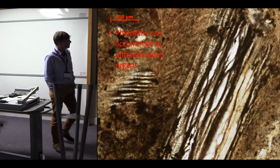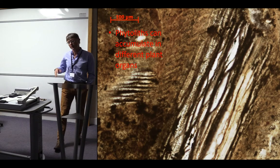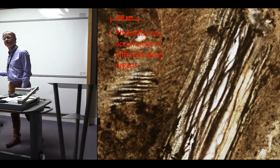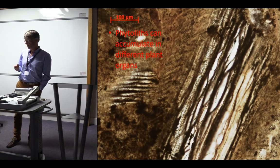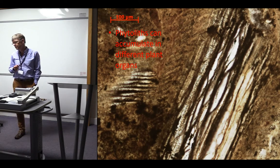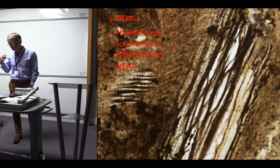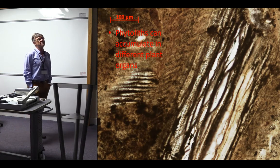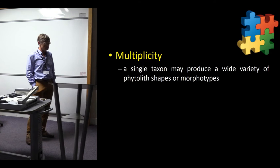Another point is that phytoliths can accumulate in a lot of different plants. You can have phytoliths deriving from leaf, inflorescence bracts, roots, seeds, and fruits. This is a major difference too. Moreover, within each organ, you can have several types of phytoliths, and this is known as multiplicity.